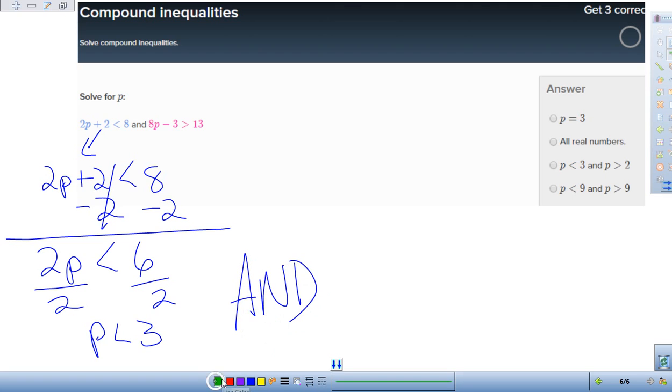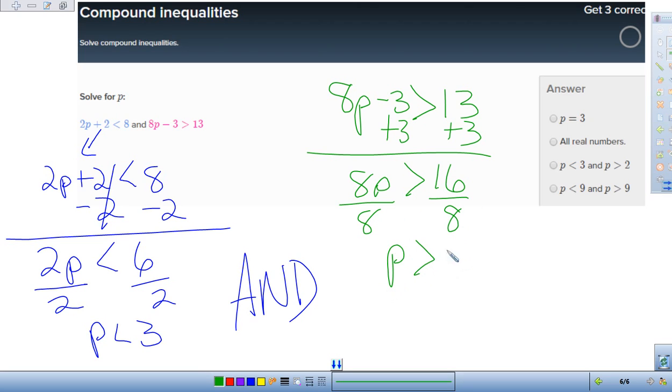And let's get the other side in here. Get green in. We go 8p minus 3 greater than 13. So if I add 3 to both sides, I get 8p is greater than 16. Divide by 8, both sides. I get p is greater than 2.